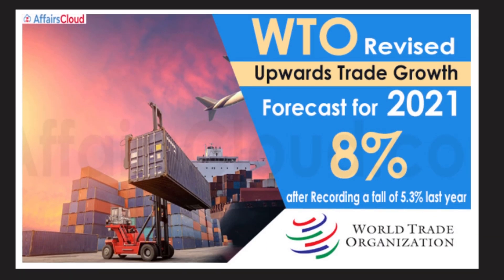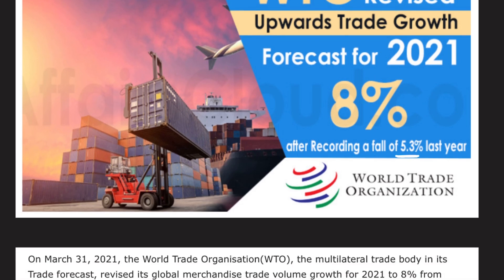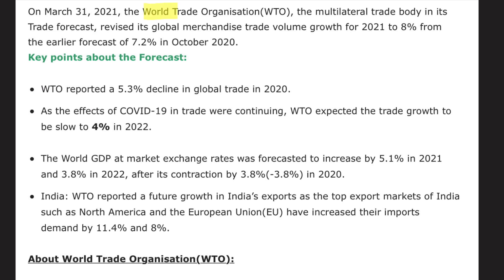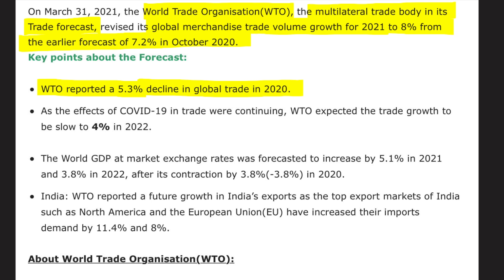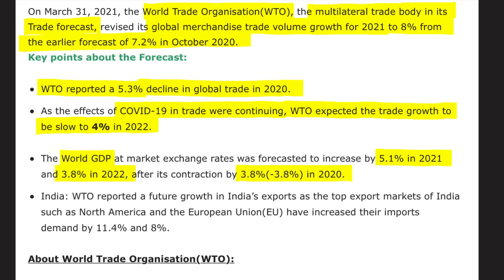Next, the WTO — World Trade Organization — revised upward its trade growth forecast for 2021 after recording a fall of 5.3% last year. The WTO revised its global merchandise trade volume growth for 2021 to 8%, up from the earlier forecast of 7.2% made in October 2020. WTO reported a 5.3% decline in global trade in 2020 due to COVID-19. Trade growth is expected to slow to 4% in 2022. World GDP at market exchange rates was forecasted to increase by 5.1% in 2021 and 3.8% in 2022, after a contraction of 3.8% in 2020.